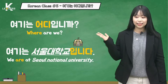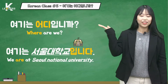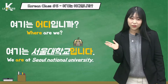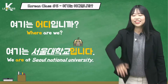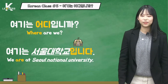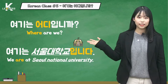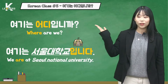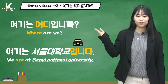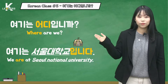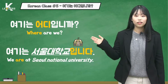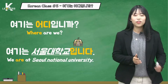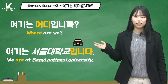The first sentence is 여기는 어디입니까? — Where are we? Last time I explained about the subject marker — do you remember? 여기 means 'here.' 는 is the subject marker. 어디입니까 means 'where.' So 여기는 어디입니까? means 'Where are we?' When you want to know the place where you are, you can use this expression.